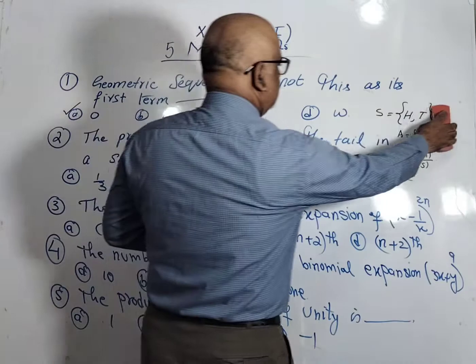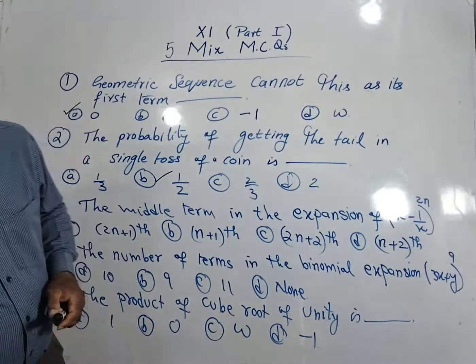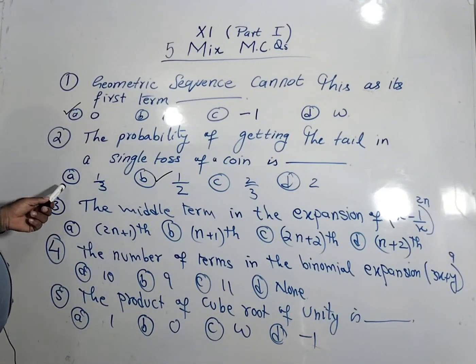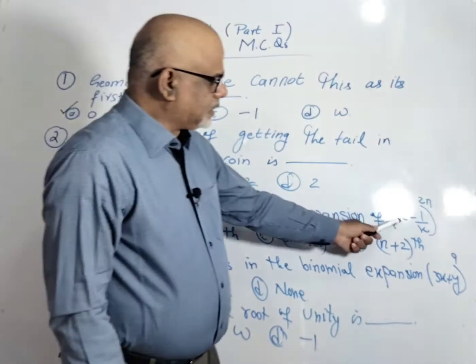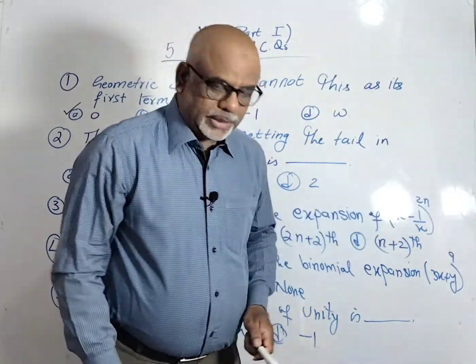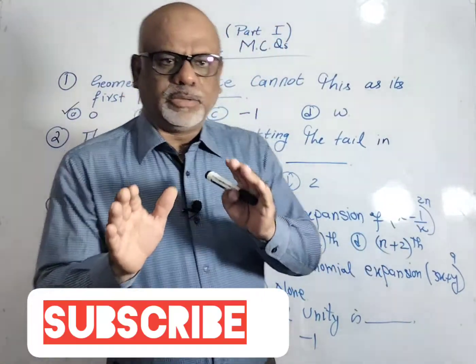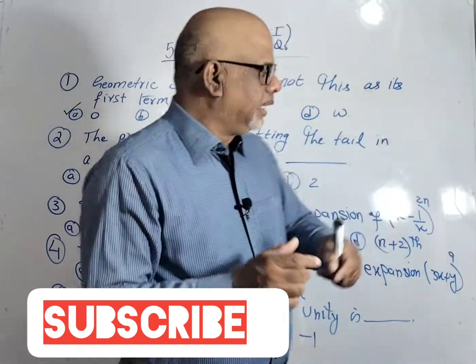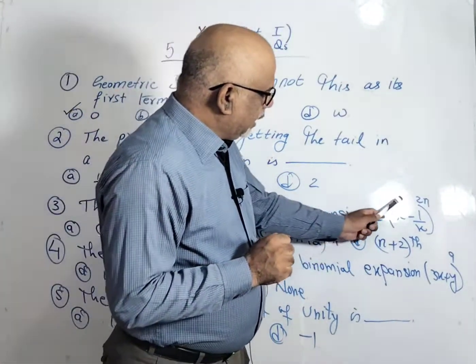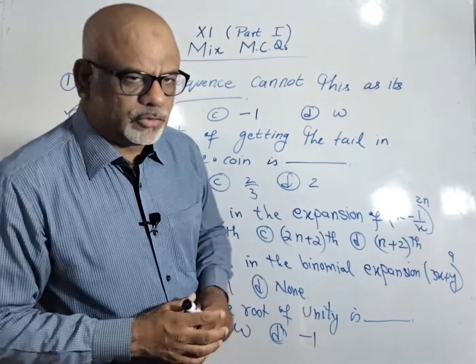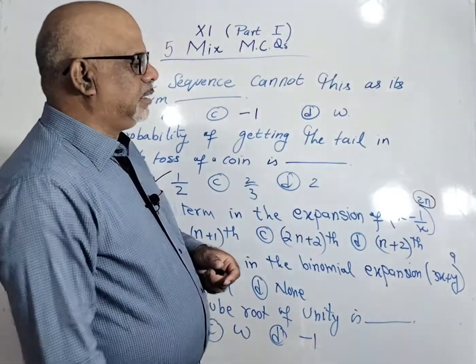Now come to the next MCQ. The third MCQ: the middle term in the expansion of (x minus 1 upon x) power 2n. 2n is an even number. When we have to find out the middle term, we face two different situations. Number one, if the power is even, we have a different formula to find out the middle term. And if we have an odd number, then we have another formula to find out the middle term here.